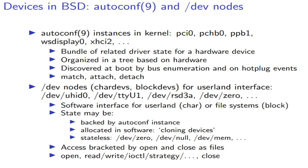In FreeBSD this is called probe and detach, but it's a similar idea. You have a function where the driver tells you whether it wants to take care of a device. If so, it allocates state, sets up state, and when you want to remove the device, the kernel calls detach. This is purely a kernel-side thing — it's just how the kernel organizes detecting devices and connecting device drivers to them.